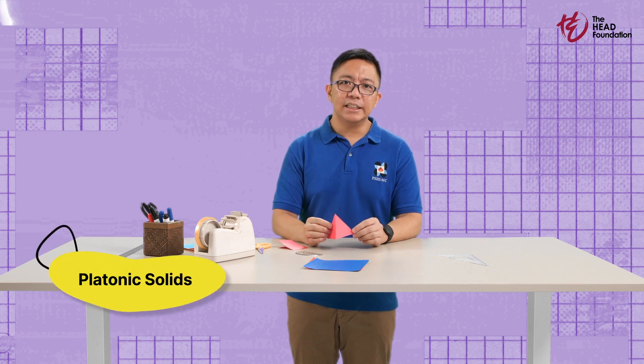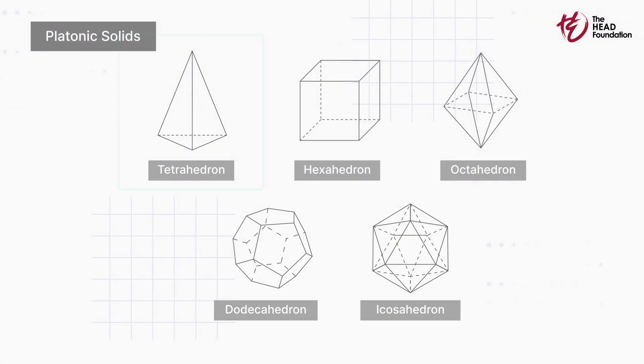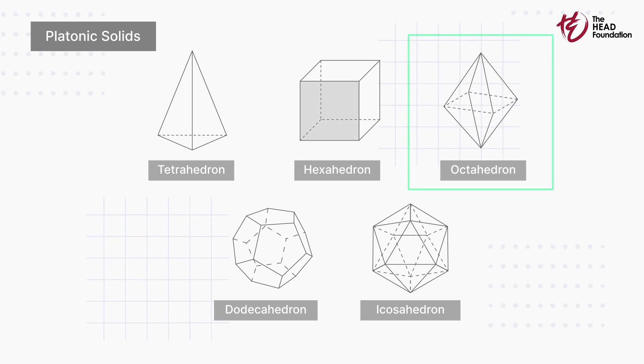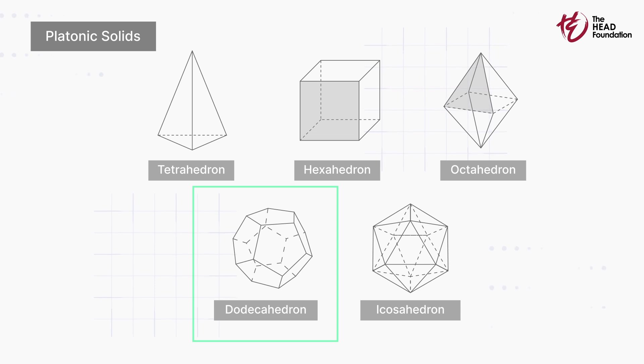By the way, this tetrahedron here, it's part of a special family called the platonic solids, where each face is a regular polygon. There are only five members in this exclusive club. The tetrahedron itself, a cube or hexahedron with square faces, the octahedron with triangular faces, like our friend here, the dodecahedron with pentagonal panels, and lastly, the 20-faced icosahedron.